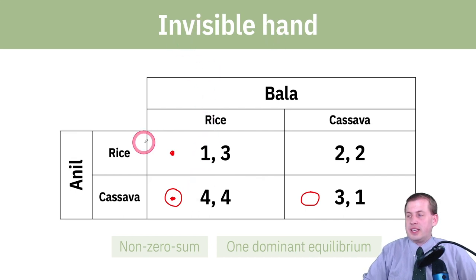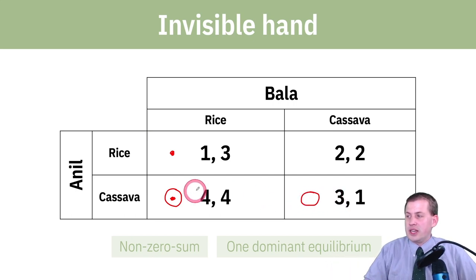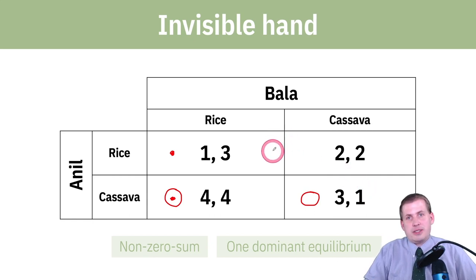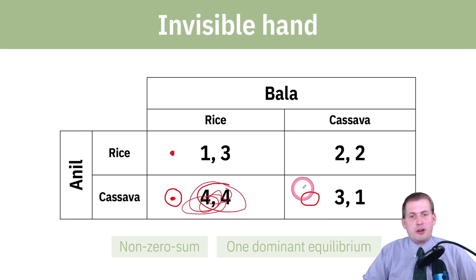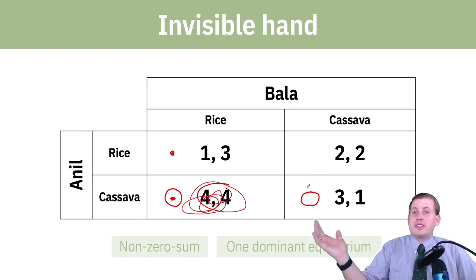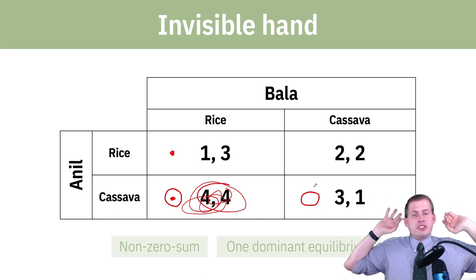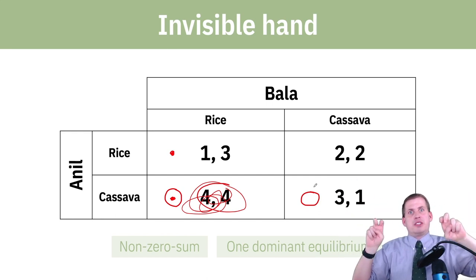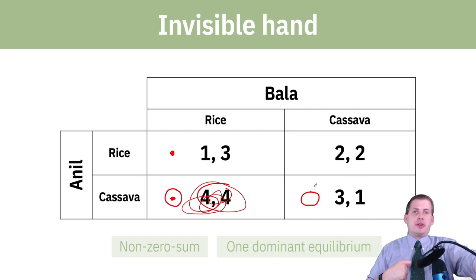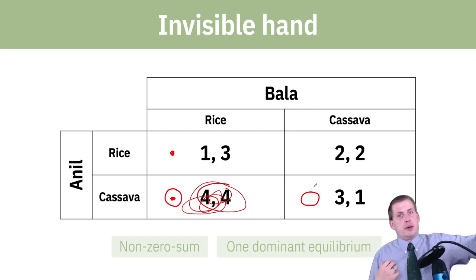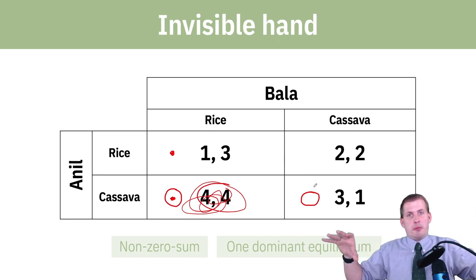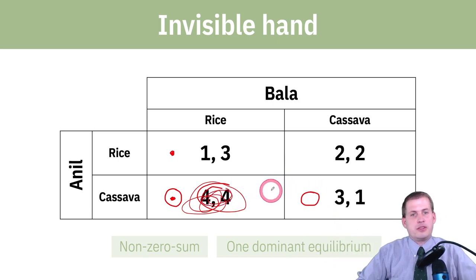This is why this is called the invisible hand game — they will just naturally choose the thing they're best at because of the structure of the payoffs. Anil will always choose cassava because he's the best at it; Bala will always choose rice because that's what he's best at. They settle on this outcome without even having to coordinate — it's just them sitting in opposite ends of a village calculating which option gives them the most happiness points, and they end up deciding their best options, resulting in the best social outcome.